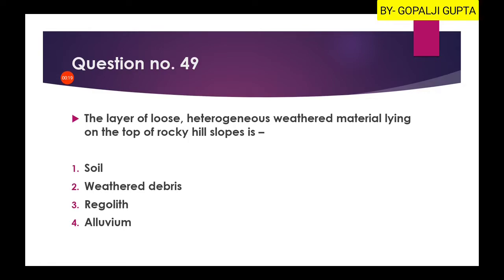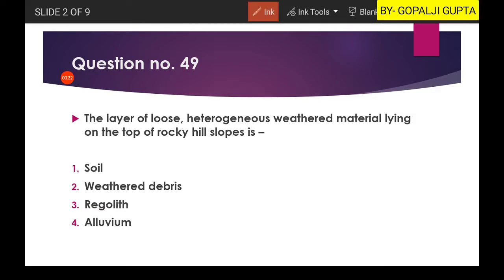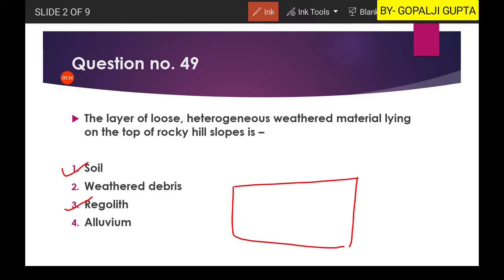Question 49: 'Layer of loose heterogeneous weathered material which is lying on the top of rocky hill slopes is?' Most students may be confused with soil, but the right answer is regolith.